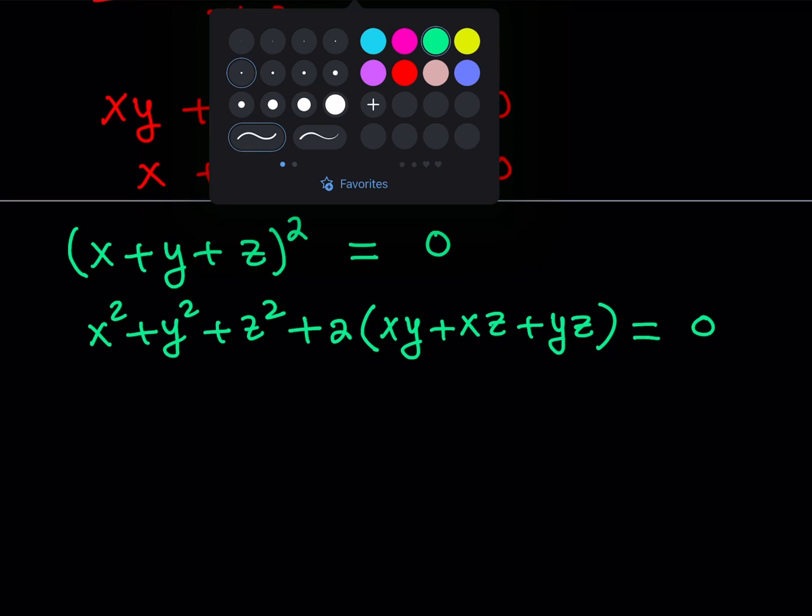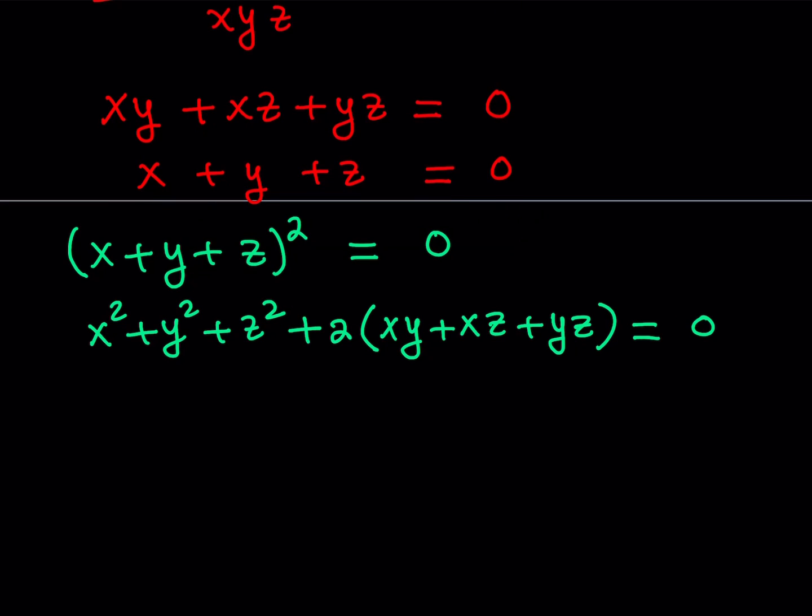This is kind of interesting because notice that we got the xy, xz, yz inside the parentheses, and we do know from here that it's equal to 0. So go ahead and replace that expression with 0. You get another equation: x squared plus y squared plus z squared plus 0 is equal to 0, which means that the sum of the squares is 0.